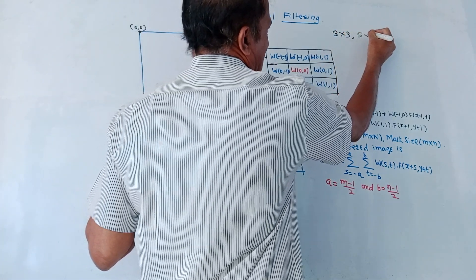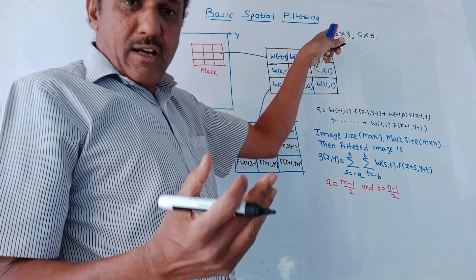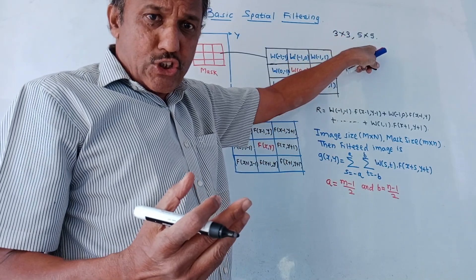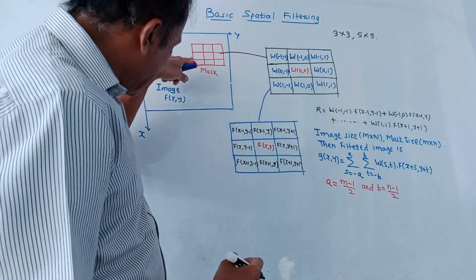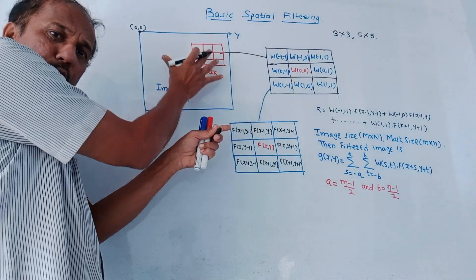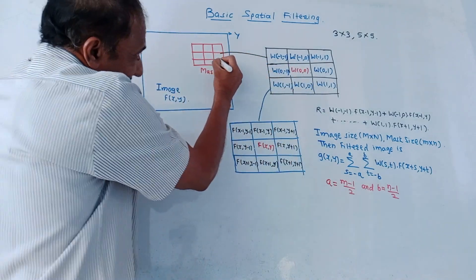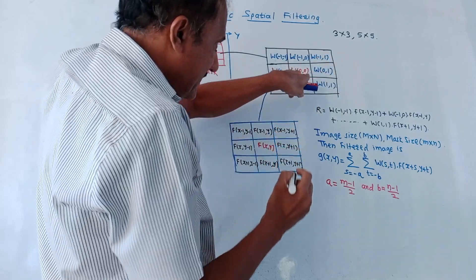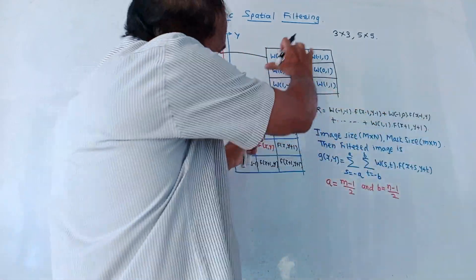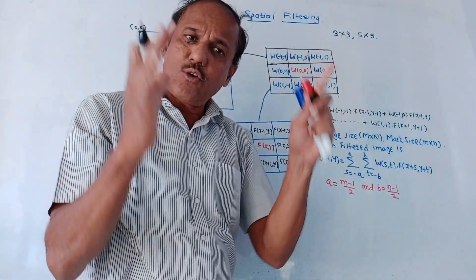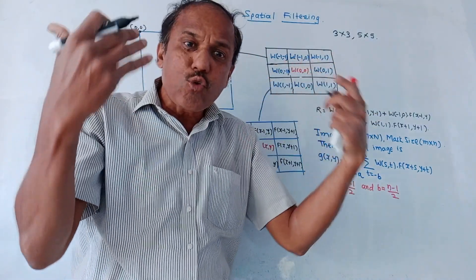The mask can be of size three by three or five by five — that means three rows and three columns, or five rows and five columns, or anything. Usually a three-by-three size is preferred just to avoid complications in the operation. This is the mask which is superimposed on an image. The mask coefficients are written in this diagram; the center point is denoted by w(0,0). All the values written in the mask are called coefficients, and these values are denoted by w — meaning weighting coefficients.